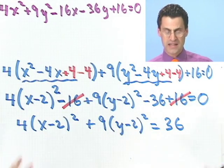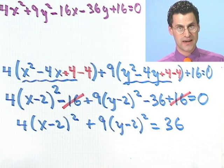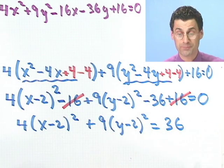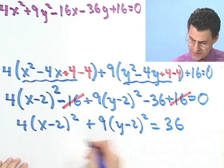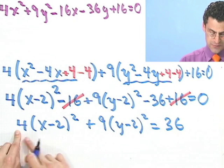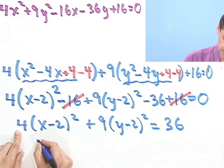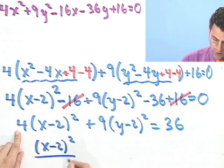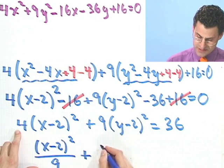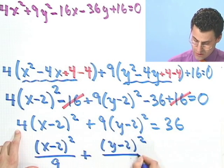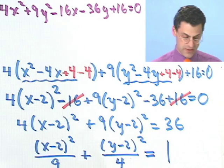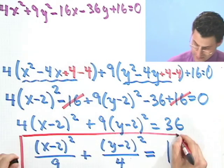This is beginning to sound and smell to me - I smell ellipse in the air because I see something squared plus something squared will equal 1. This sounds like an ellipse is forming. So if I divide everything through by 36, what would I see? When I divide this term by 36 I would see (x - 2)²/9 plus (y - 2)²/4 and that equals 1.